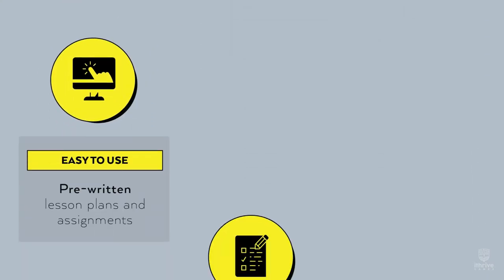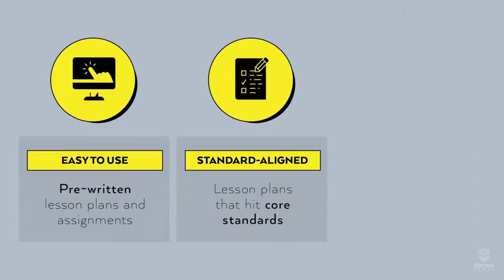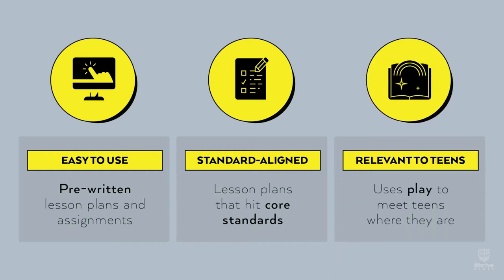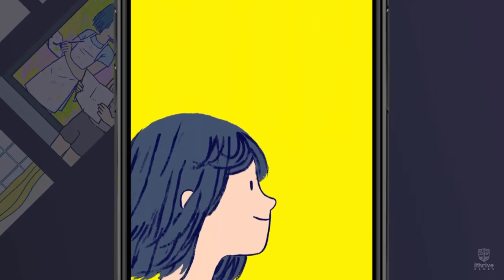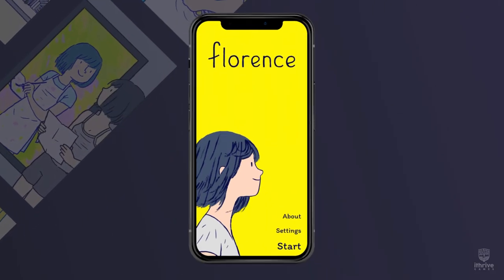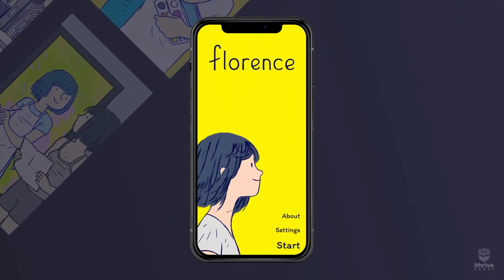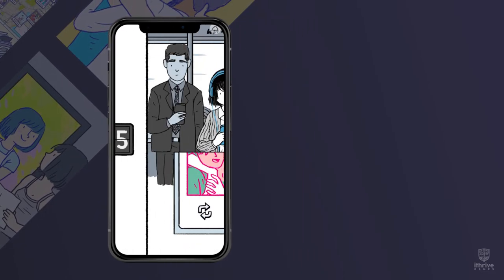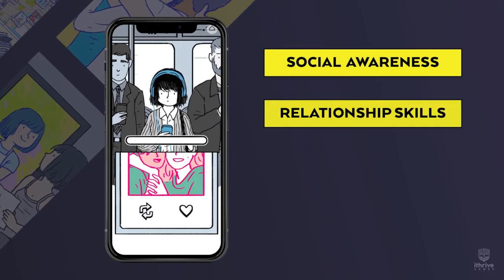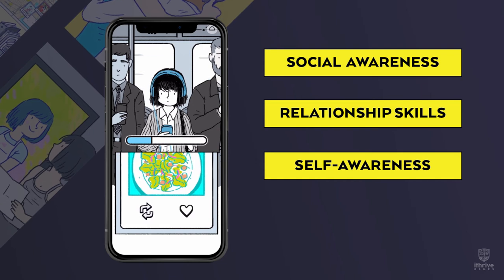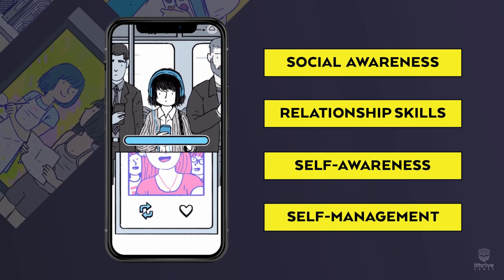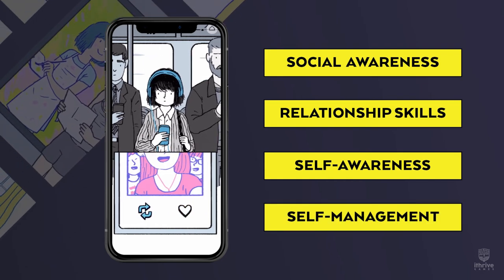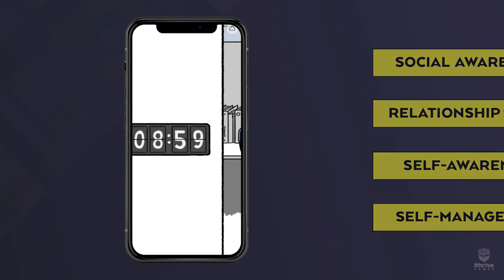It's easy to implement, aligns with the state and national standards you need to meet in your classroom, and meets teens where they are in the digital world. Based around the narrative of Florence, a touching immersive media experience, these eight 45-minute pre-written lessons embed opportunities to build social awareness, relationship skills, self-awareness, and self-management — social and emotional competencies that help your students thrive.